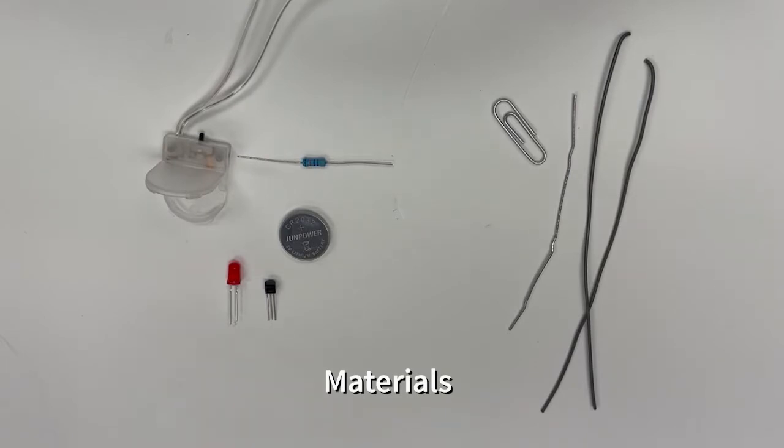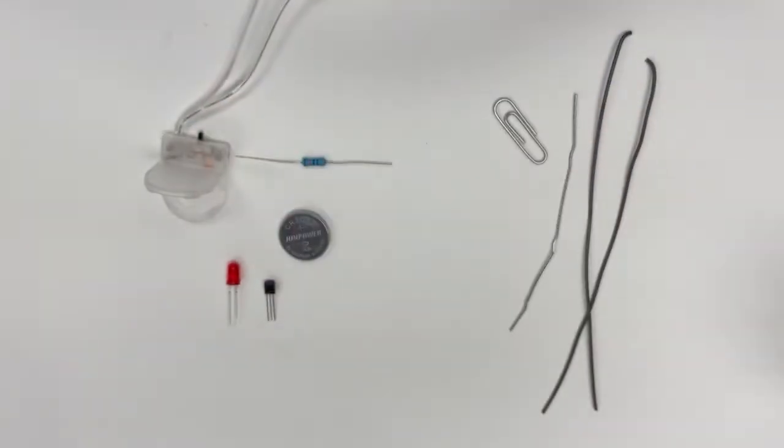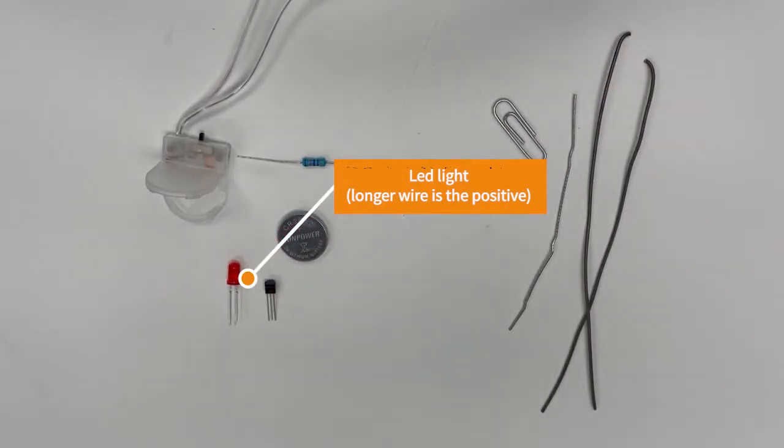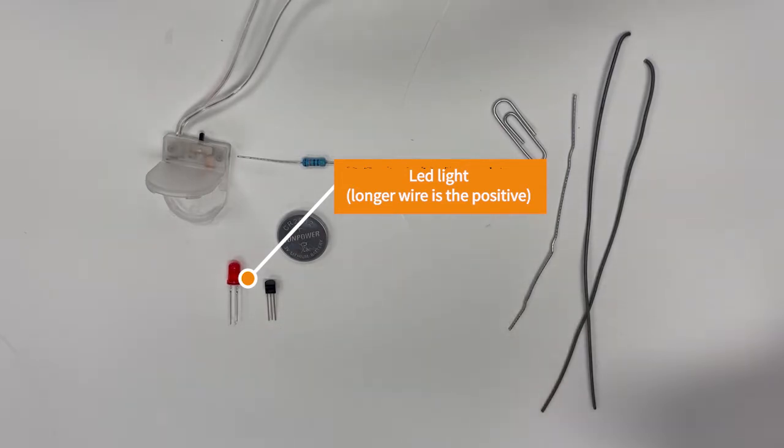All right, so the materials to make a soil moisture indicator like this one is first an LED light. You can see that the LED light has two rods and one is longer than the other. The longer rod is the positive.